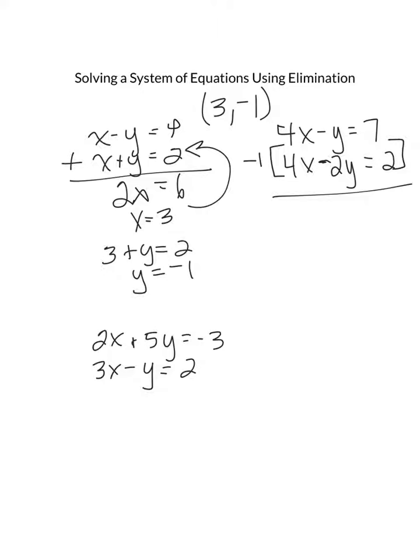When I multiply this one by negative 1, the top equation is going to stay the same. It's 4x minus y equals 7. This bottom one is going to become negative 4x plus 2y equals negative 2. You have to make sure you multiply every single piece.